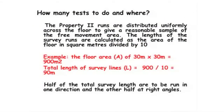What you're looking for is known as Property Two. Property Two gives you the shortwave characteristics — it tells you that to get a picture of how good a free movement area floor is, you take the area of the floor (in this example 900 square meters) and run Property Two over a tenth of that in linear meters. So 900 square meters equals 90 meters, 9,000 equals 900.